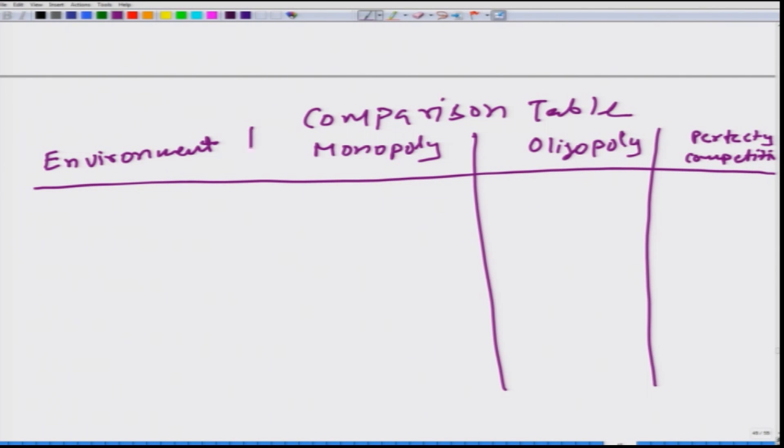So, let us first look at the number of sellers: number 1, here we have few, 2, 3, 4, and here we have many.